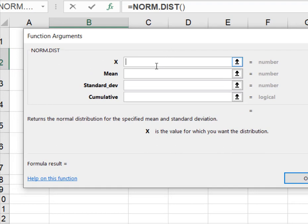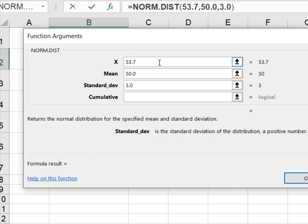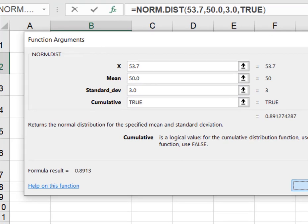That's going to give us this dialog box. We knew that our value of X on the curve was 53.7 pounds. We were told that the mean weight was 50 pounds with a standard deviation of 3 pounds and because we want a cumulative probability in this logic argument, we're simply going to type true and we're going to hit OK.